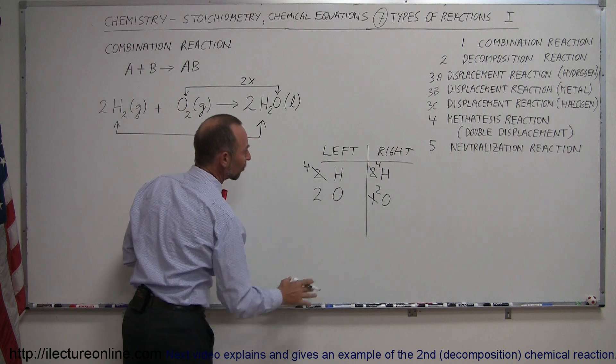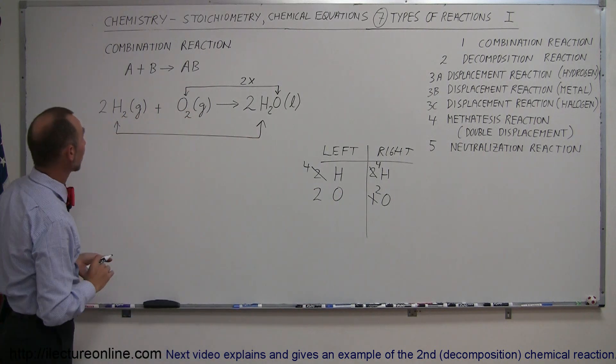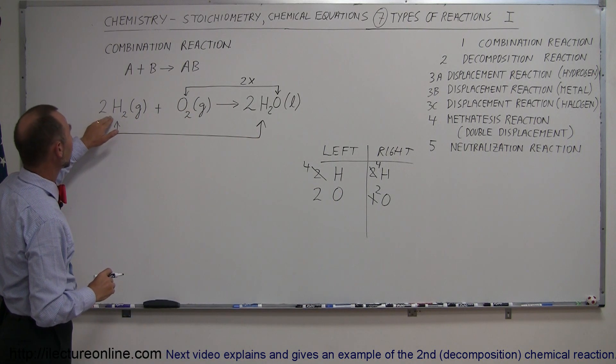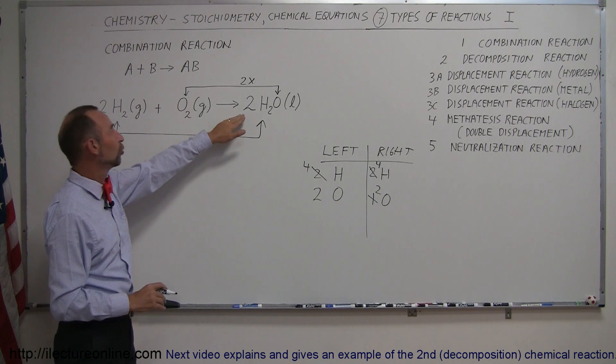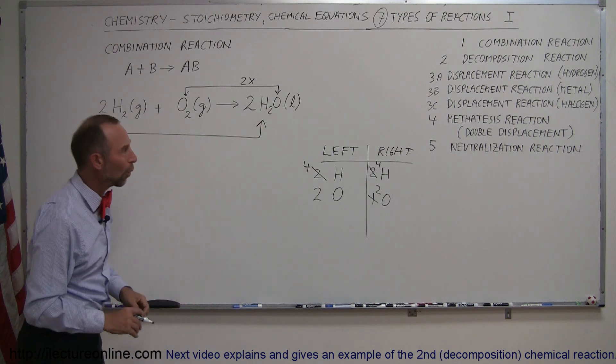We have a hydrogen balance, we have oxygen balance. Now, we have ourselves a balanced equation. So, two moles of hydrogen gas plus one mole of oxygen gas forms two moles of liquid water.